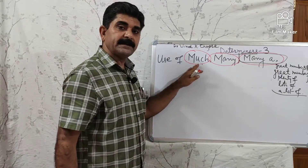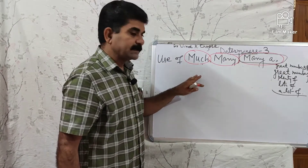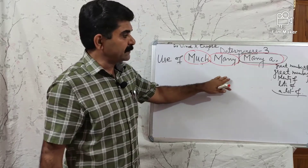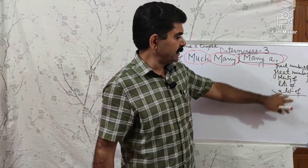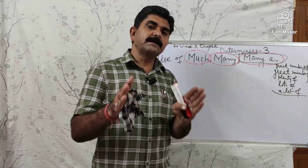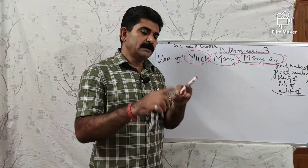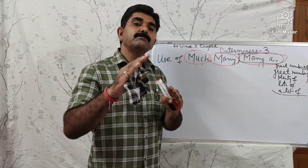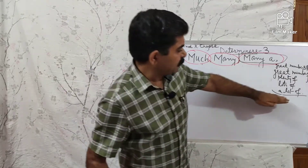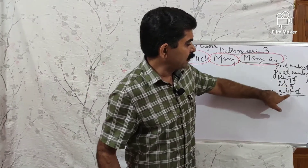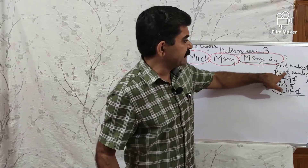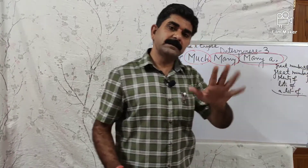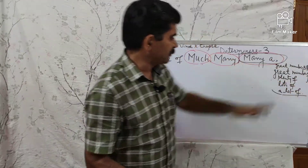Determiners may be one word — like the, some, many, much — or they can contain more than one word. For example: lots of is two words, a lot of is three words, a great number of is four words, great numbers of is three words. So these multi-word phrases are also determiners, and each is considered a single determiner.